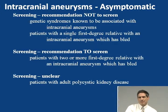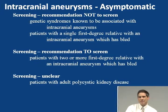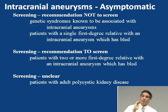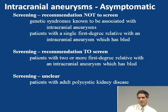Regarding screening for asymptomatic aneurysms, there really isn't any role for such screening in the general population. Recommendations are generally not to screen patients with genetic syndromes known to be associated with intracranial aneurysms, and not to screen for patients with a single first-degree relative with an intracranial aneurysm. However, if you have patients with two or more first-degree relatives with bleeding intracranial aneurysms, you probably should screen those. The role of screening in adult polycystic kidney disease — which has associated aneurysms in the circle of Willis — is unsettled.